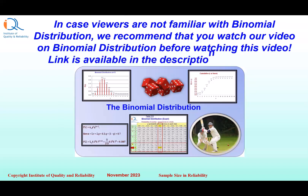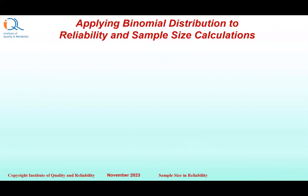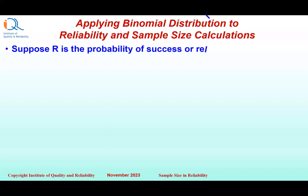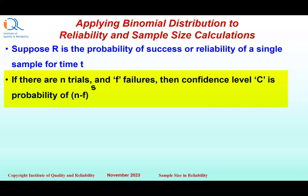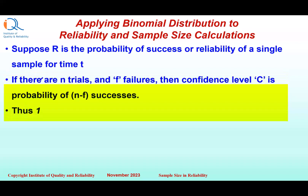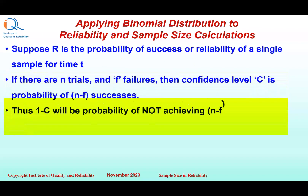A link to our video on binomial distribution is available in the description of this video. Now let us understand the mathematics of the binomial distribution application to reliability and sample size calculations. Suppose R is the probability of success or reliability of a single sample for time t. If there are N trials and F number of failures, then confidence level C is the probability of N minus F successes. Thus 1 minus confidence level C will be the probability of not achieving N minus F successes.